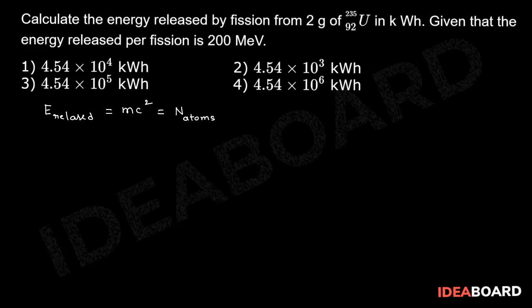This is N atoms into energy in the fission. Thereby E released is equal to small m by capital M times NA into energy in the fission.